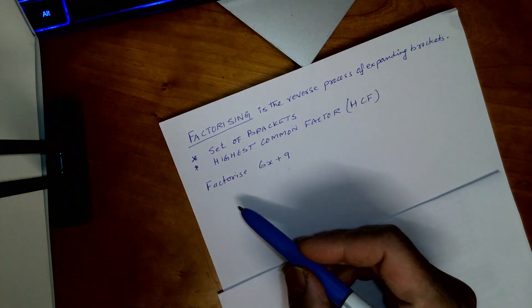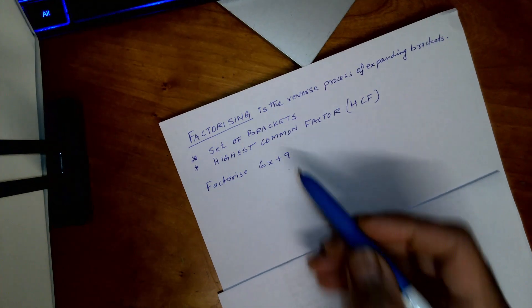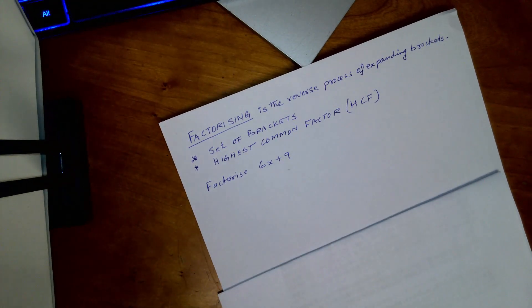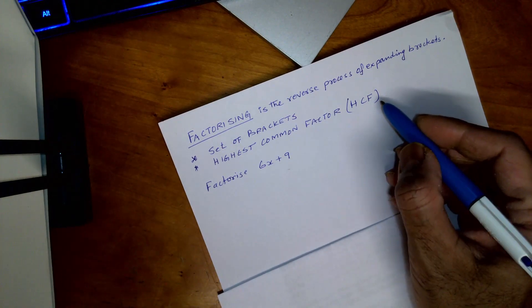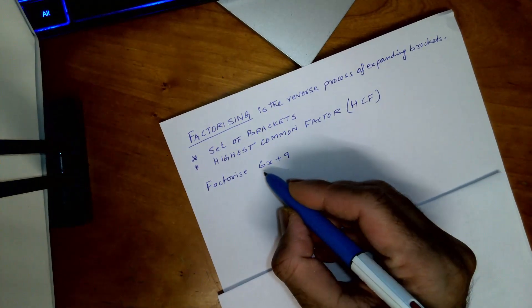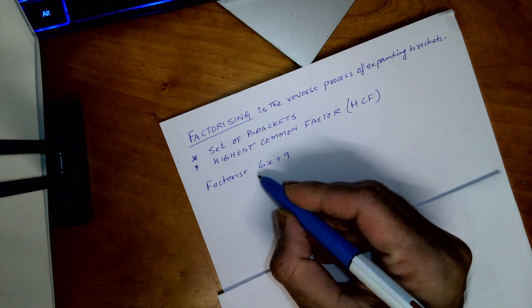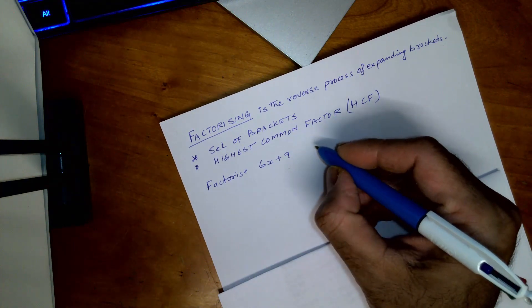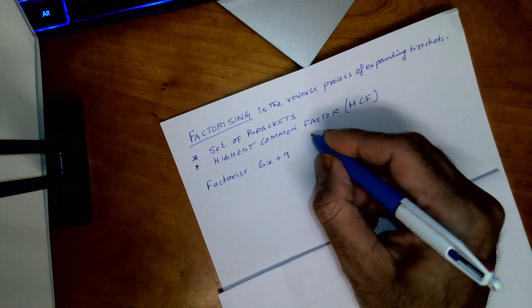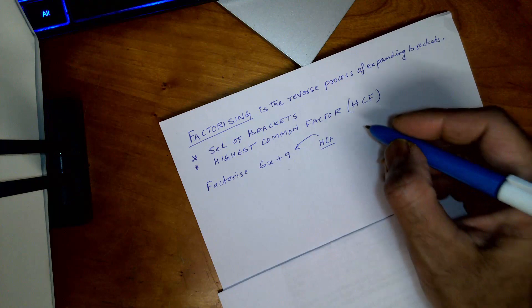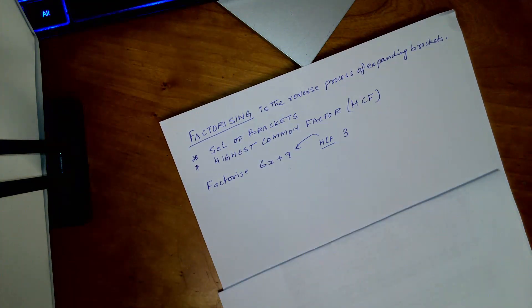So let's take an example which is 6x plus 9. To factorize this expression, what we do is we look for highest common factor, which is HCF. So let's look into that one. In this factorize equation, the HCF of this would be 3.